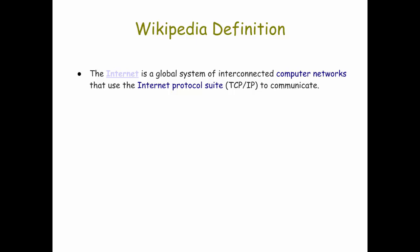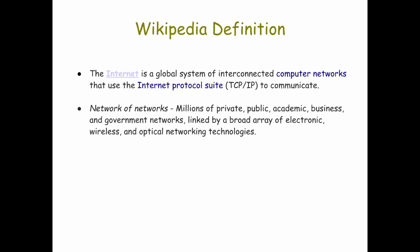Wikipedia defines the Internet as a global system of interconnected computer networks that use the Internet Protocol Suite, which is made up of two protocols called TCP and IP. You don't need to know the details of those, but they are used to communicate and send information on the network. The Internet is a network of networks — not a single network — but millions of private, public, academic, business, and government networks that are all linked by a whole variety of different kinds of networking technologies.